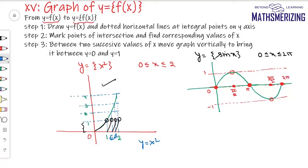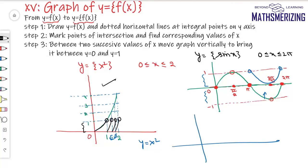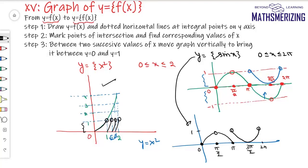Now I'll shift the graph up and down as needed. The part between 0 and π already lies between 0 and 1, so I won't change it. The part between π and 2π lies between 0 and −1, so I'll move it up. That gives the graph of y = {sin x}, with key points at 0, π/2, π, 3π/2, and 2π, with maximum value 1.